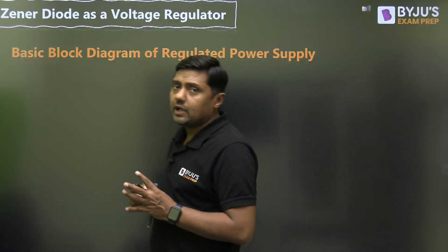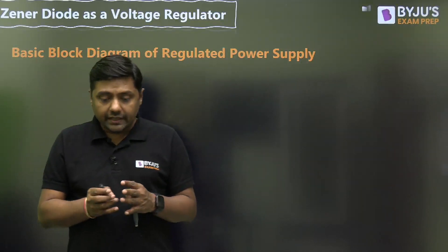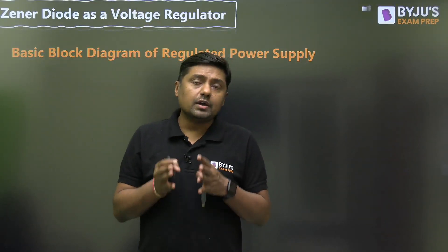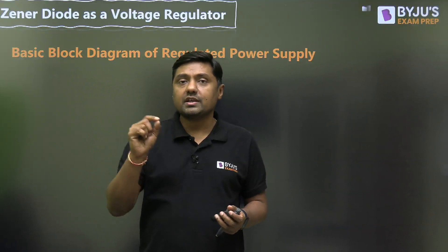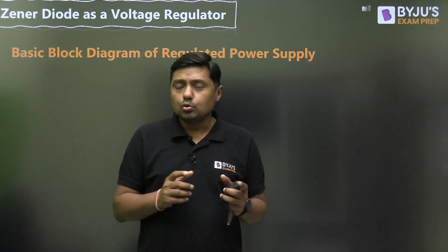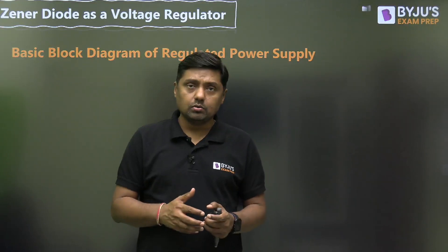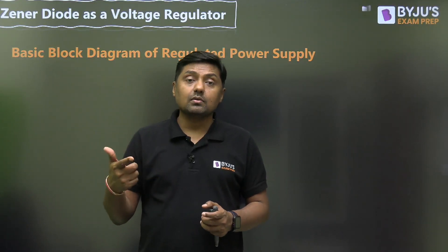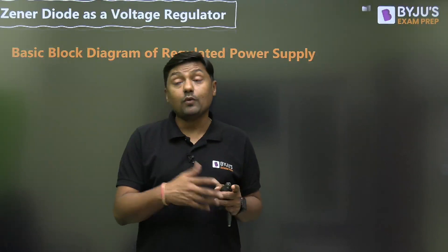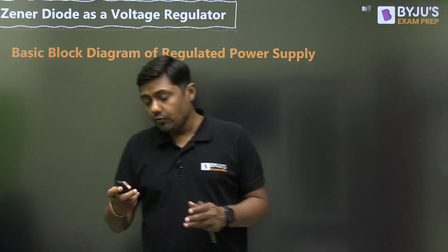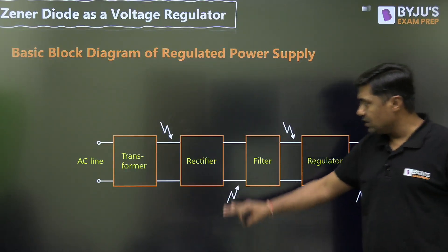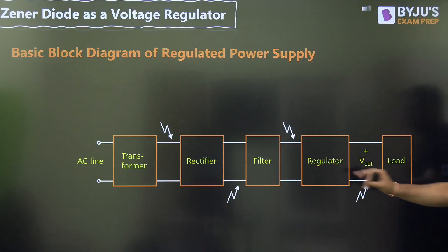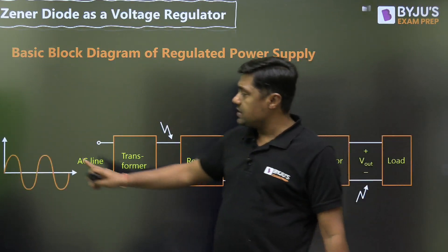First, you will get the idea of what is the role of the voltage regulator and how we convert an AC signal into DC. Normally we read the AC signal as 230 volts, 50 Hz — 230 volt is the RMS value. This sinusoidal signal is converted into a DC signal, which may be 10 volt or 15 volt. The block diagram shows: transformer, then rectifier, then filter circuit, then regulator, and finally the load.